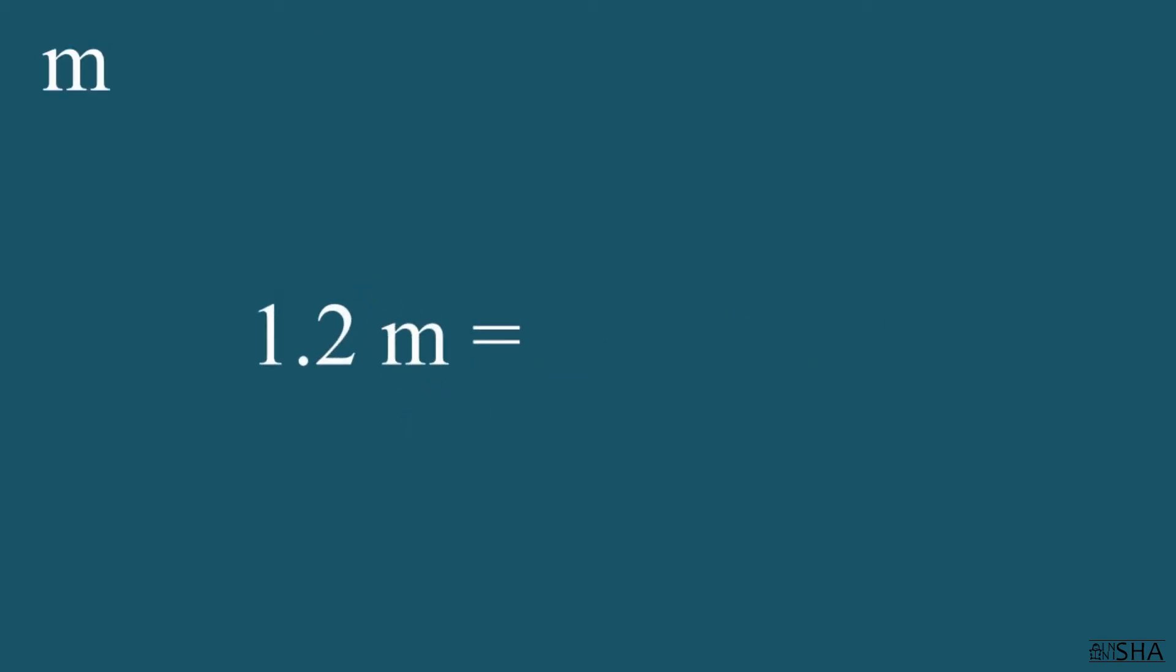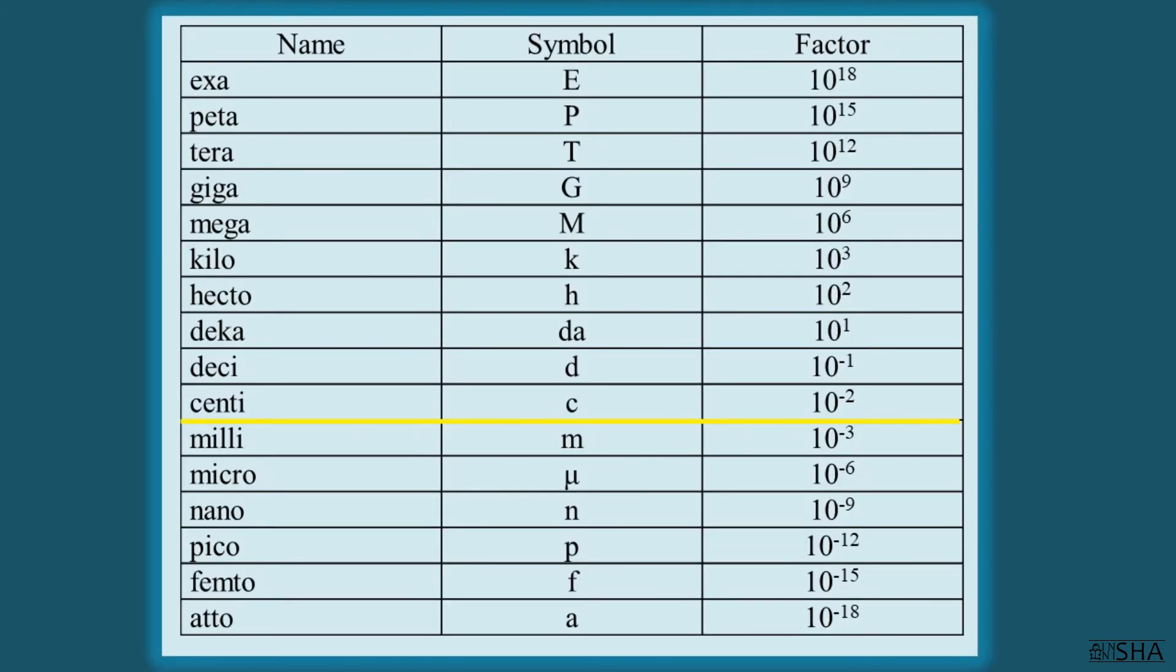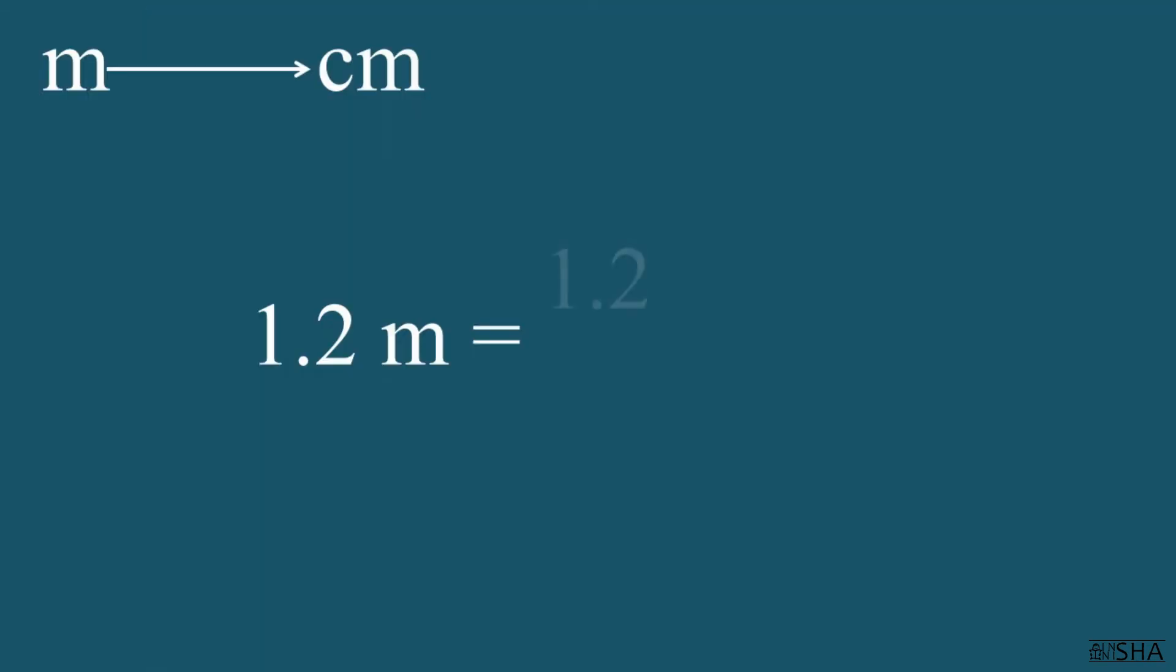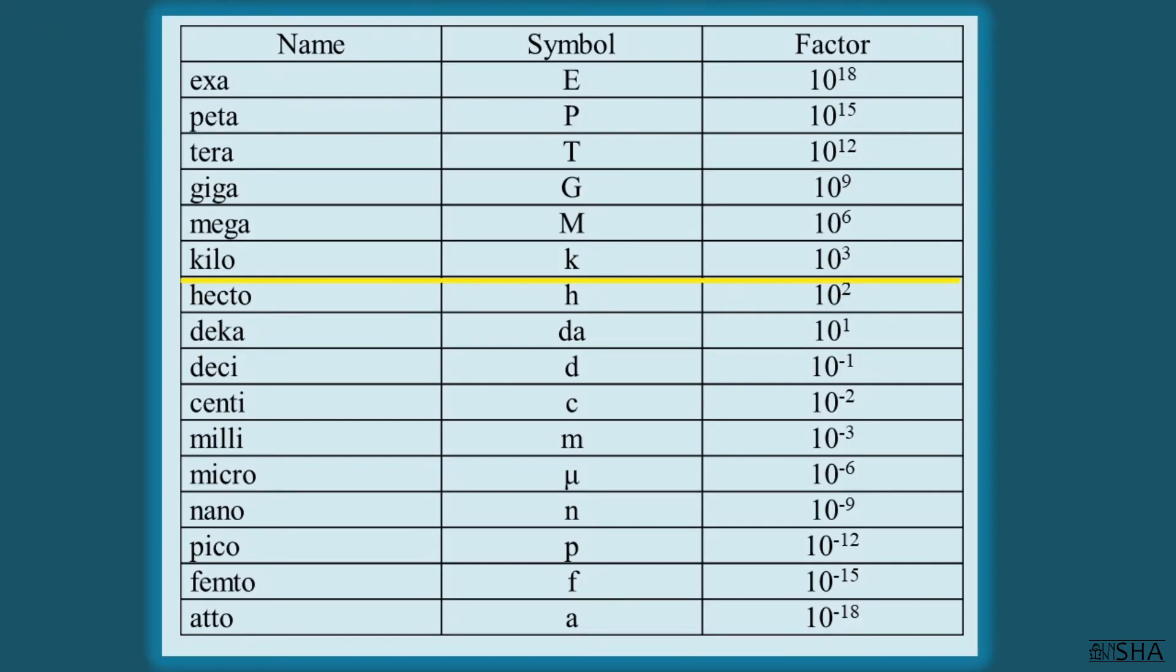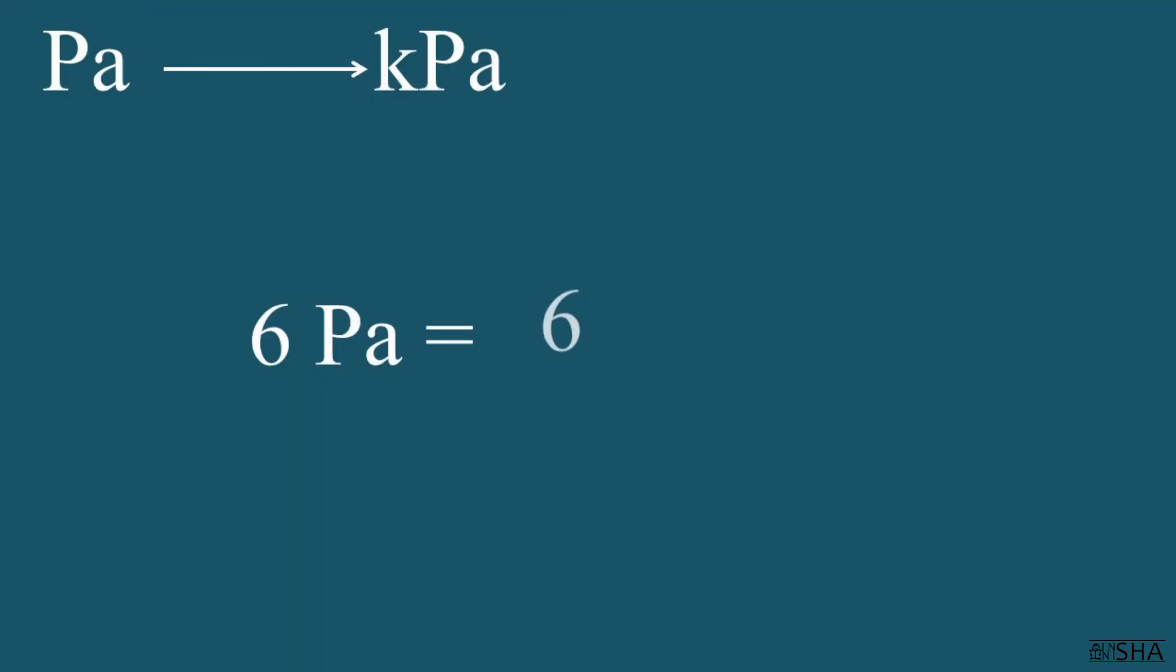1.2 meters convert to centimeters. We write 1.2 multiplied by 10 to the 2nd power. Do not forget to change the sign of the power. Convert 6 pascals to kilopascals. This means that 6 must be multiplied by 10 to the negative 3rd power.